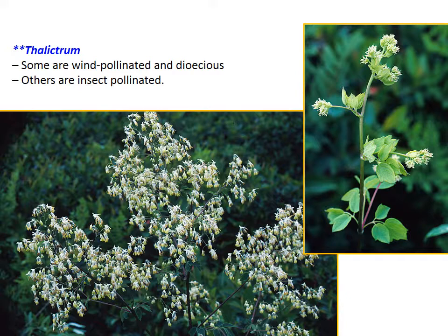Here's another example, Thalictrum, or the meadow rues. Many of them are wind pollinated and dioecious with separate male and female plants, but there are also some species in the same genus that are insect pollinated with more showy flowers. One vegetative feature quite consistent among the Ranunculaceae is compound leaves, which are often singly or even doubly compound. You can see that in this picture of Thalictrum with ternately compound leaves — compound with three leaflets.